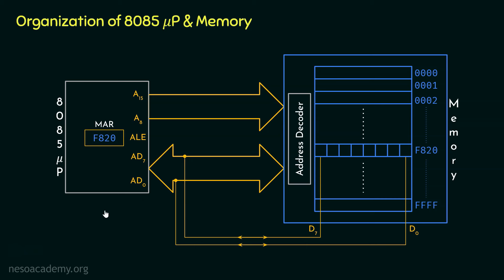Let me show you one prominent difference between the microprocessor and the memory. For the microprocessor, the same lower order address bus also serves as the data bus. However, for the memory, there are separate sets of address lines and data lines. Since in the case of the 8085 the lower order address bus and data bus are multiplexed together, we need the functionality of ALE.